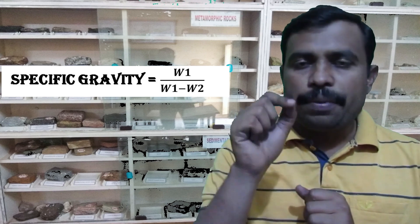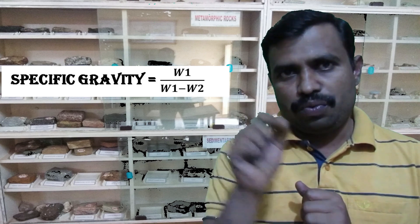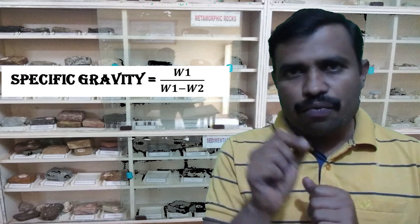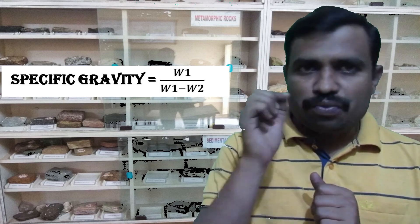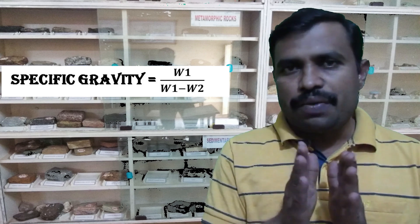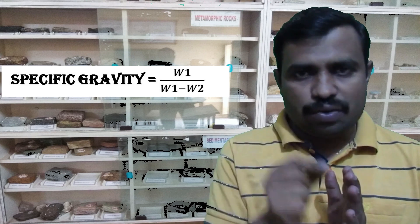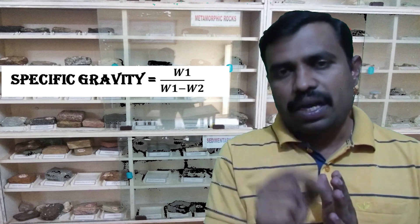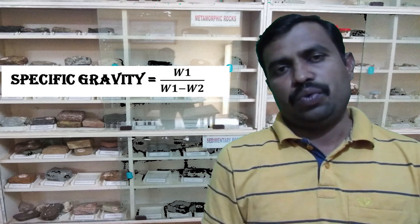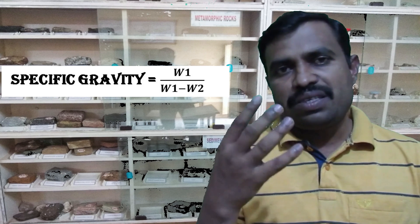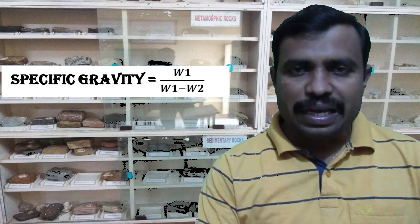There is a formula: specific gravity is equal to W1 divided by W1 minus W2. If W1 is the weight of the mineral in air and W2 is its weight in water, so its specific gravity will be W1 divided by W1 minus W2. When we put values in this equation, we will get the specific gravity of any mineral.